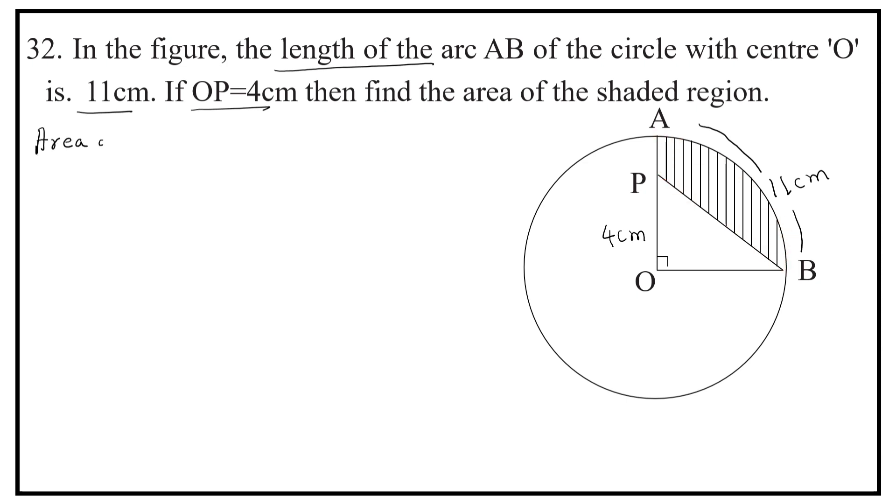Area of the shaded region is equal to area of the sector OAB minus area of the triangle OPB. You need R, the radius, to calculate area of the sector as well as area of the triangle. So, how to calculate it?